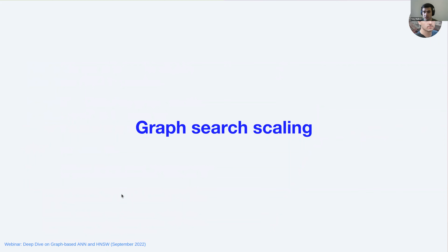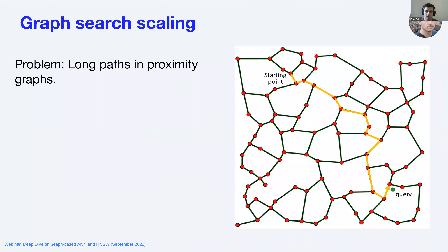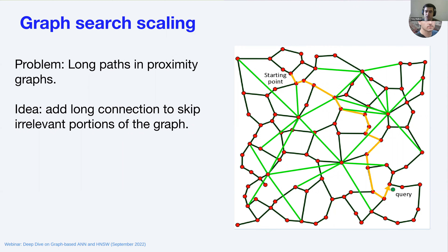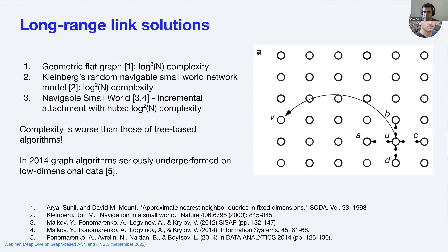Moving to graph search scaling: if you plot the graph in 2D, start from a random point, and do greedy traversal towards the query, the path can be rather long. The expected path length follows a power law with n, which is a real problem in some applications. One idea — not the only solution — is to add long connections to your graph so that greedy search can skip some nodes, making the scaling much better.